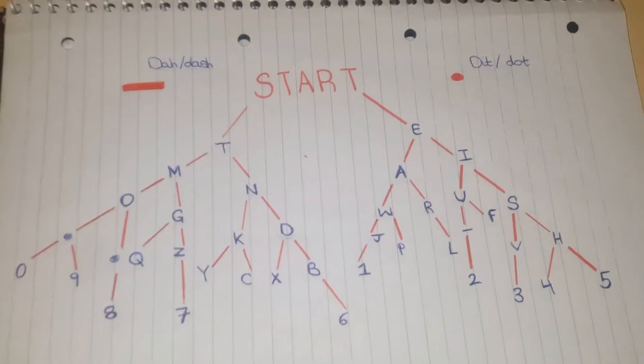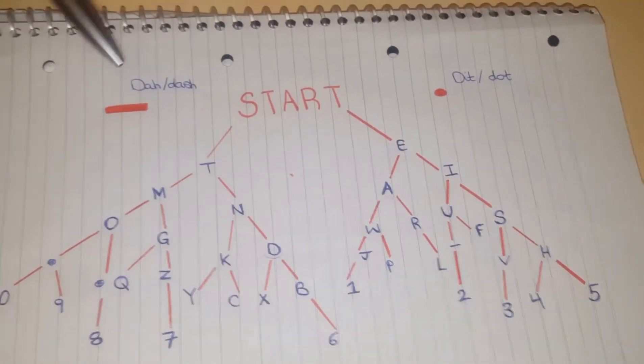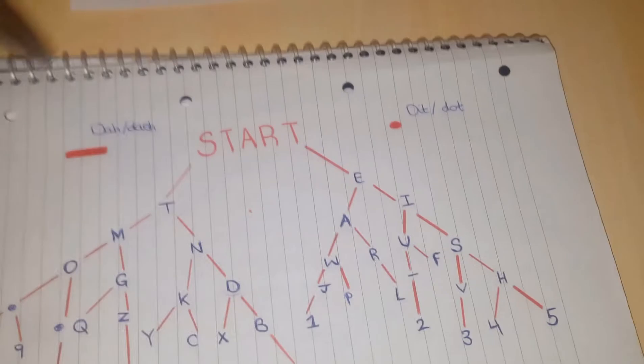Right, so here we are on the thing that I drew. So, this is the start, and on the left we have dashes, and on the right we have dots.